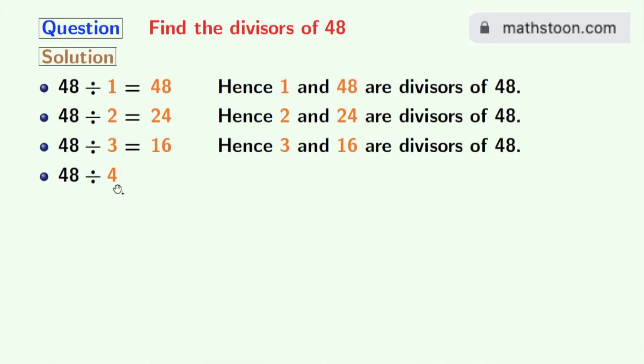48 divided by 4 is equal to 12. So, we get 4 and 12 as the divisors of 48.